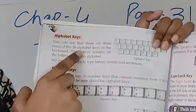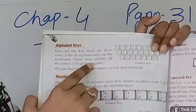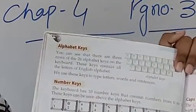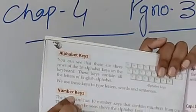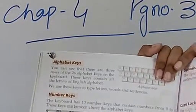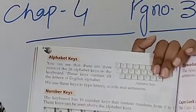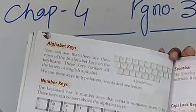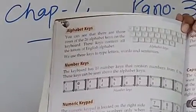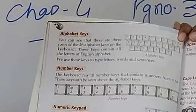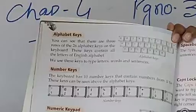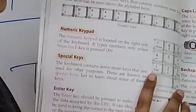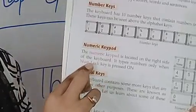What are alphabet keys? 26 letters of the alphabet marked on them are alphabet keys, and we can write messages and any sentence or words or letters with the help of the alphabet key. The keyboard has 10 number keys, from 0 to 9, and you can do calculations with these number keys. The numeric keypad is located on the right side of the keyboard and it types numbers only when the num lock key is pressed on.